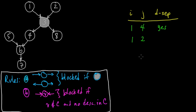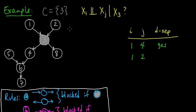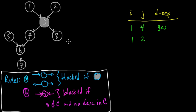Let's think about 1 and 2. Are they d-separated given C? Since this is a tree, there's always a unique path between any two vertices. The path from 1 to 2 goes 1→3←2, which is a head-to-head relationship at vertex 3. For Case B, it's blocked only if vertex 3 is not in C — but 3 is in C, so it's not blocked.